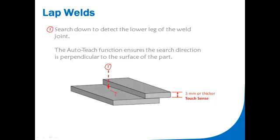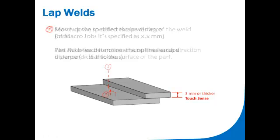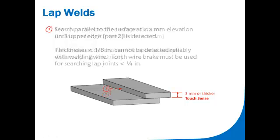AutoTeach automatically determines the optimal search direction perpendicular to the work surface. It also detects the work surface and moves up a specified distance before searching for the upper part. AutoTeach then searches for the upper part, automatically determining the angle of the upper part and searching perpendicular during operation, ensuring the most accurate results regardless of part orientation.